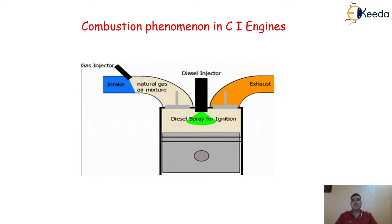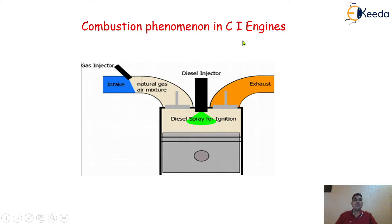As we already discussed the combustion phenomena in the case of SI engines, where petrol is a very important fuel. But in the case of compression ignition engines, we are using diesel as a fuel. The combustion phenomena in the case of SI engines is a different one, and the combustion phenomena in the case of CI engines is a different one. This is only because of the properties of petrol as well as the properties of diesel.